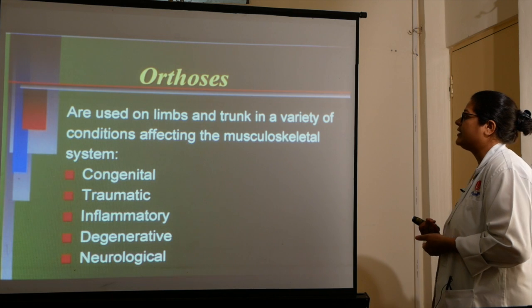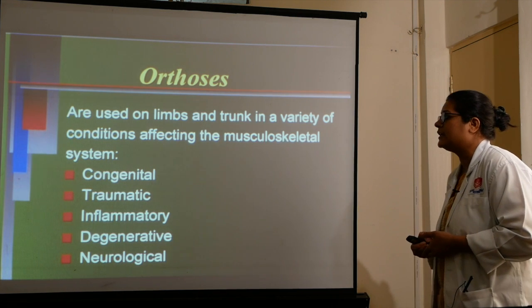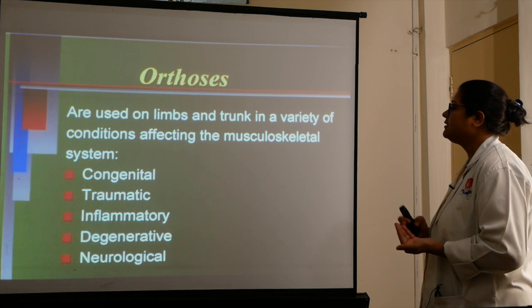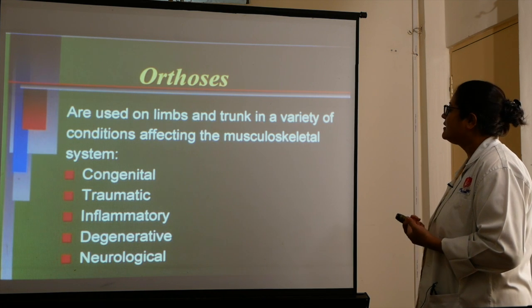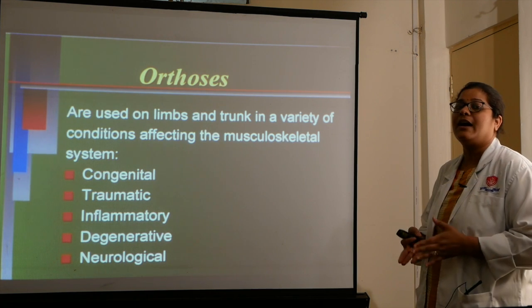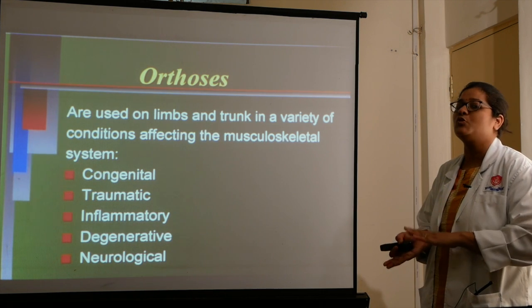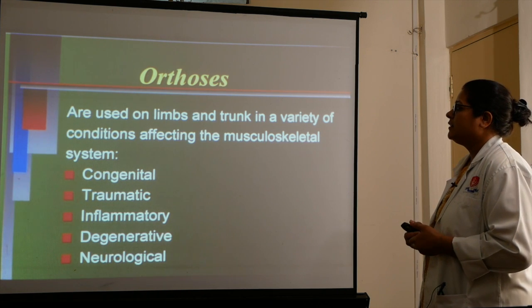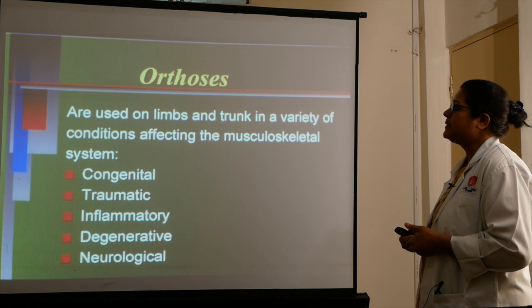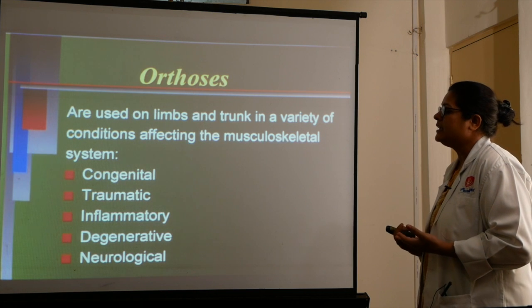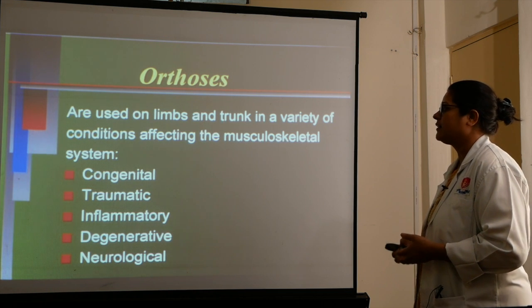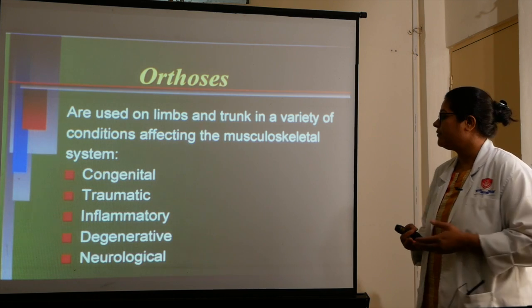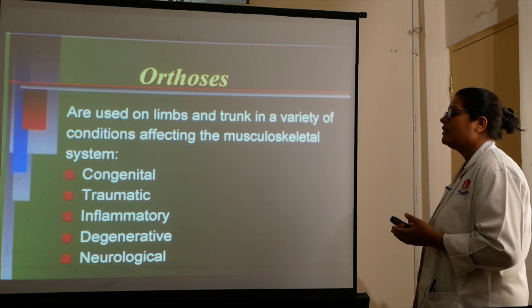Orthoses are used on limbs and trunks in a variety of conditions affecting the musculoskeletal system. Orthoses are devices which aid our ideal movement. We basically use them in many conditions: congenital, traumatic, degenerative, and neurological.